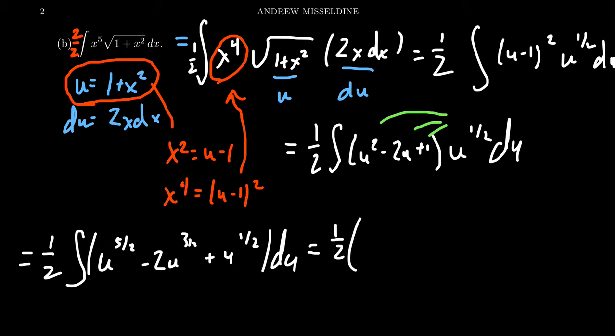So using the anti-derivative rules here for the power rule, we'll increase each power by one. So five halves becomes seven halves, divide by seven halves. The next one, you're going to raise the power to be the five halves, divide by five halves. And then lastly, your u's power will raise to three halves, divide by three halves, and add a constant here.